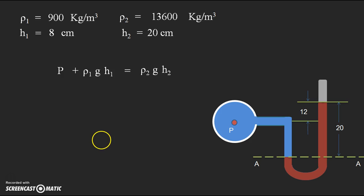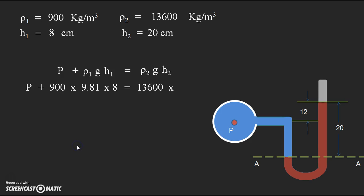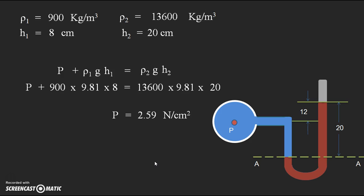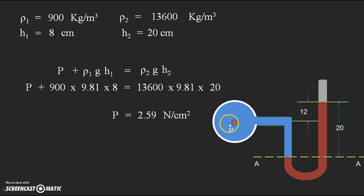Now substituting all values: P + 900 × 9.81 × 8 = 13600 × 9.81 × 20 (heights in centimeters). Taking the left-hand fluid pressure term to the right side and calculating, we get P = 2.59 N/cm², which is the required pressure inside the pipe at the center of the pipe.